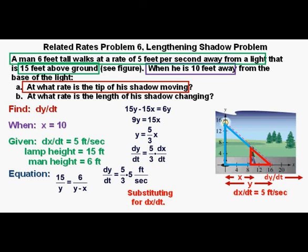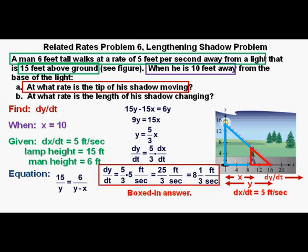which is 25 thirds feet per second, which in mixed number form is 8 and 1 third feet per second. And we box this answer in as our correct answer.